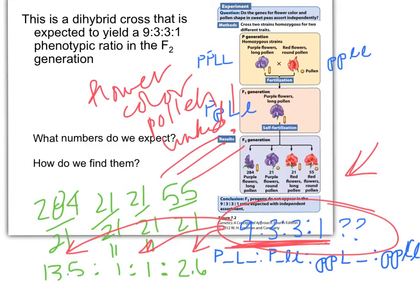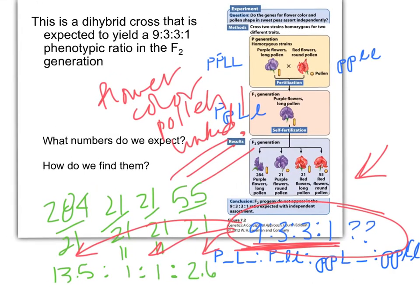So this is a dihybrid cross, which we'd expect 9 to 3 to 3 to 1 in our F2, right? We definitely start with homozygous dominant, homozygous recessive — at least in the parental generation it has to be homozygous, true breeding. We get the F1 double heterozygous. We then self-fertilize, just as usual, to our normal F2, and we would expect a 9 to 3 to 3 to 1 ratio here.